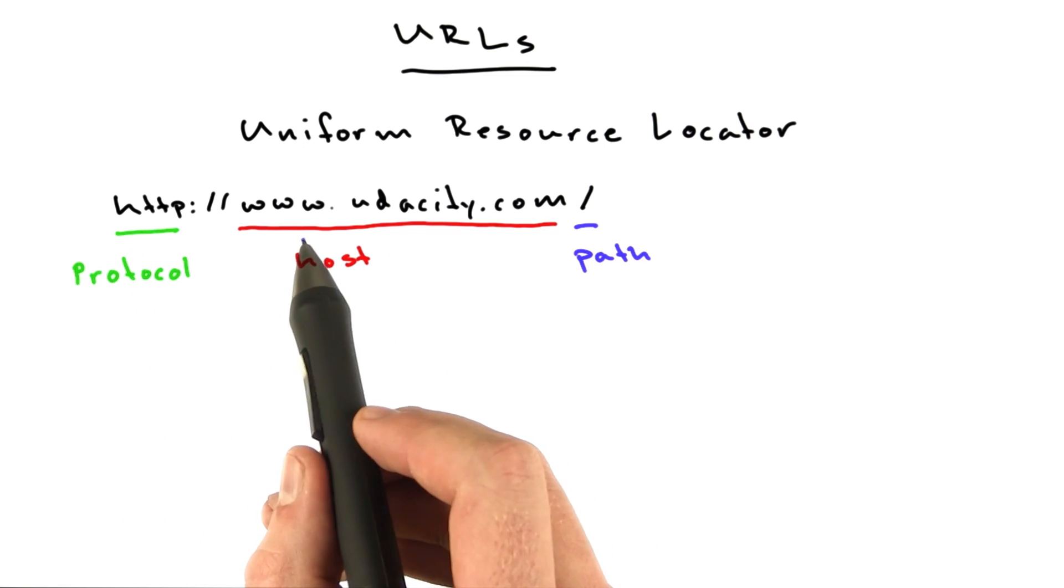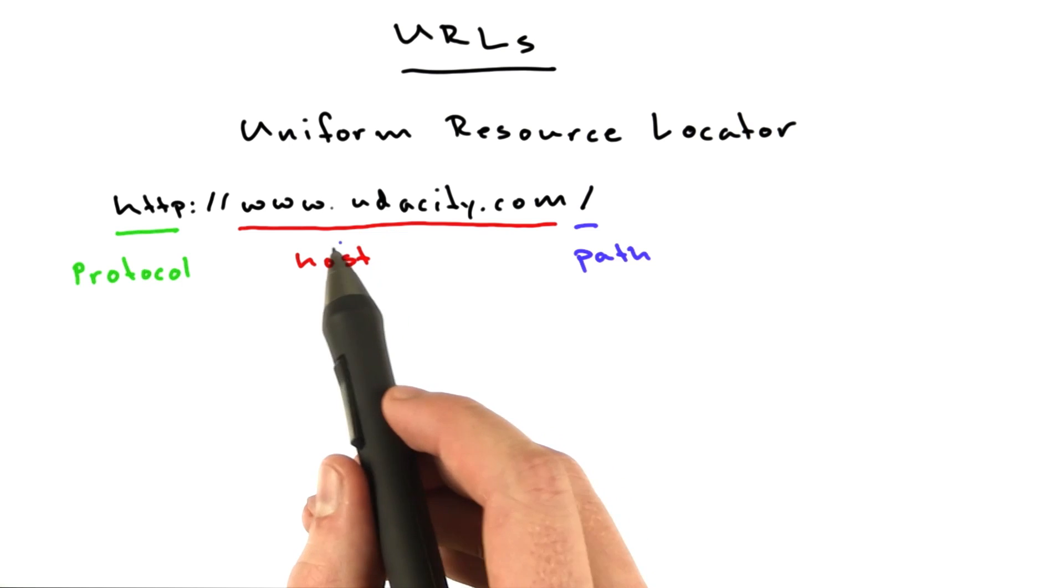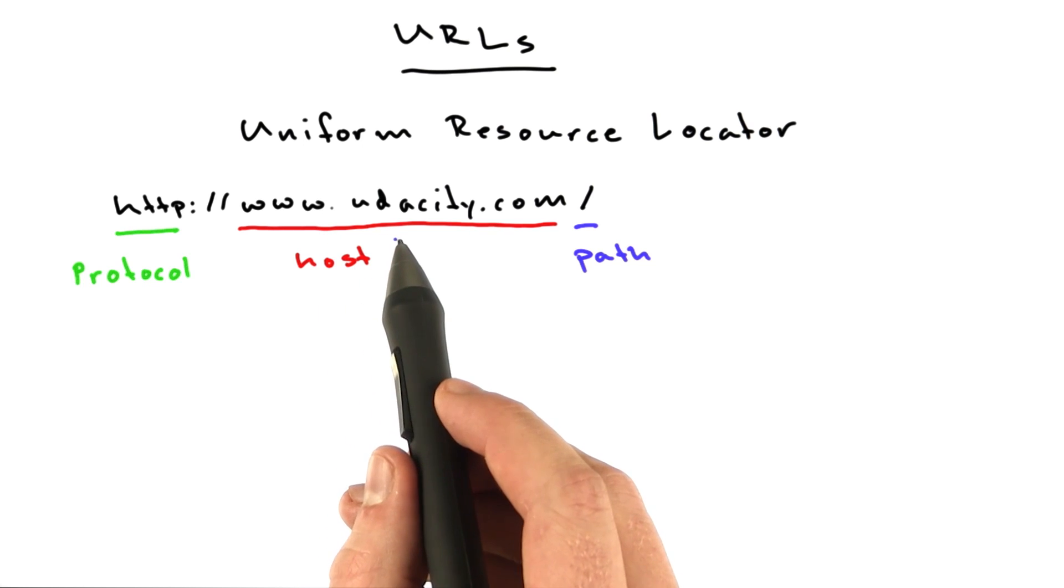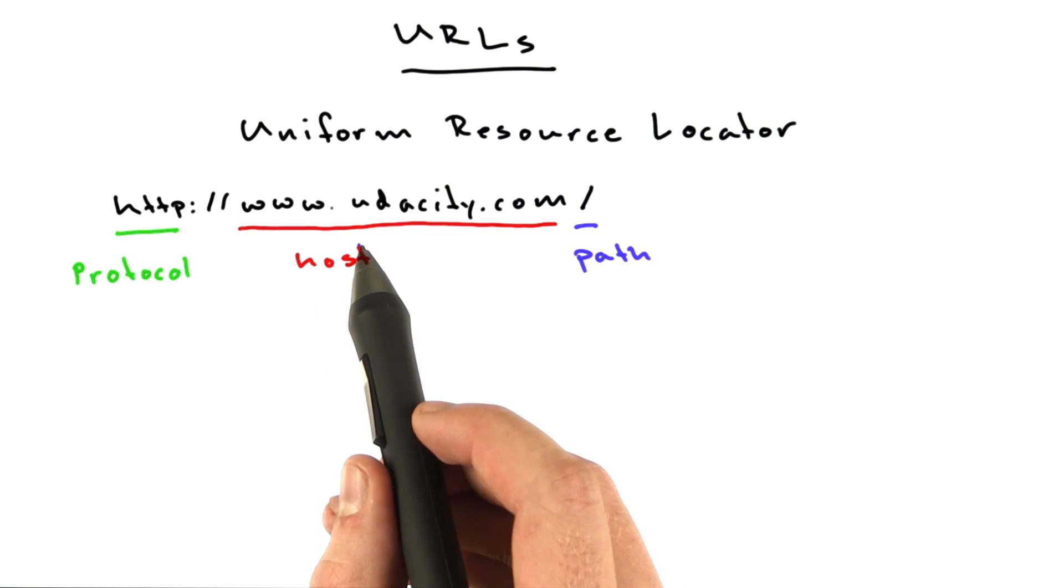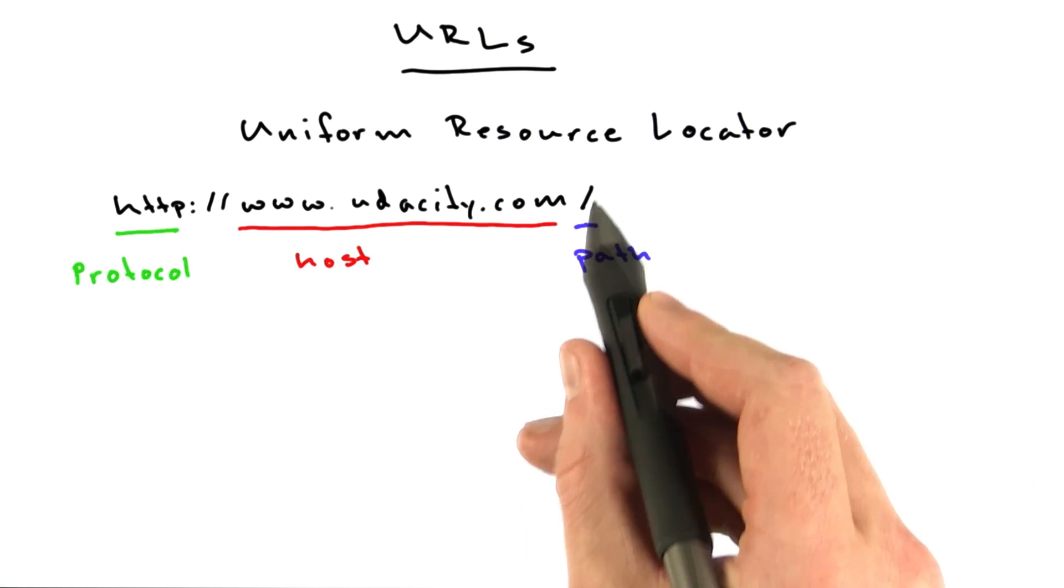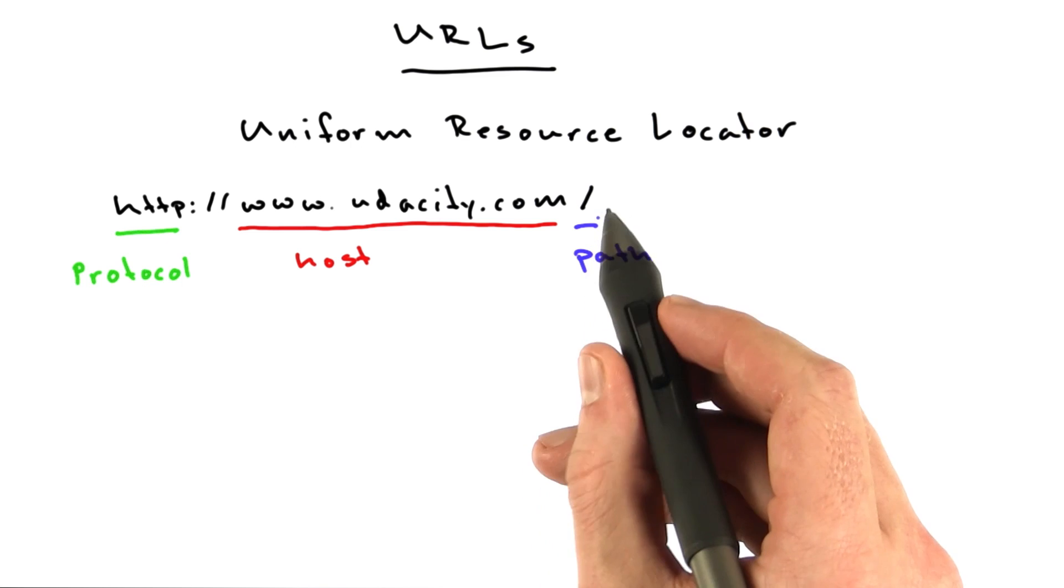The host, this is the host name or domain name of the server that has the document we want to access. This can also be an IP address. This host translates into an IP address. And this is the description of the location of the physical machine that has the document we want to fetch. And the path is the document we're going to fetch.